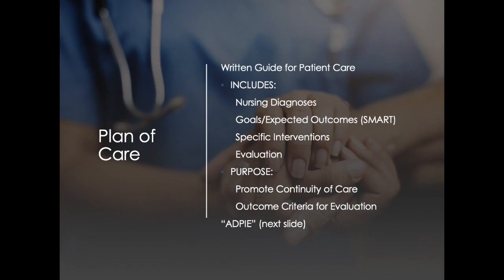Our plan of care includes writing a nursing diagnosis, which you probably learned in nursing school. Some are still using those; some have moved completely away to just nursing problems — you can use them interchangeably. We'll have goals with expected outcomes using SMART goals — Specific, Measurable, Attainable, Realistic, and Timely. We need specific interventions within our scope of practice, and we have to evaluate what we did to see if it worked. This promotes continuity of care and provides outcome criteria for evaluating patient progress.